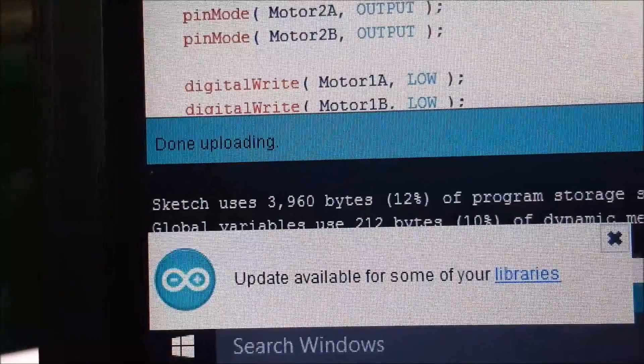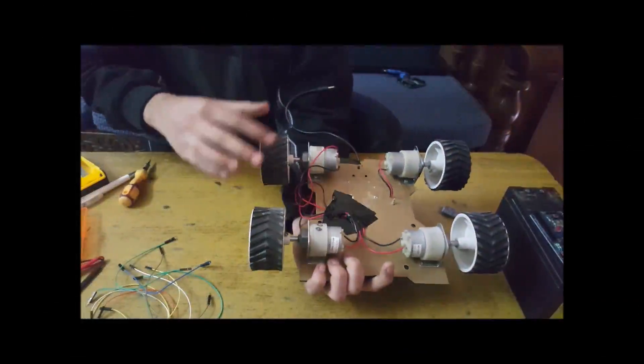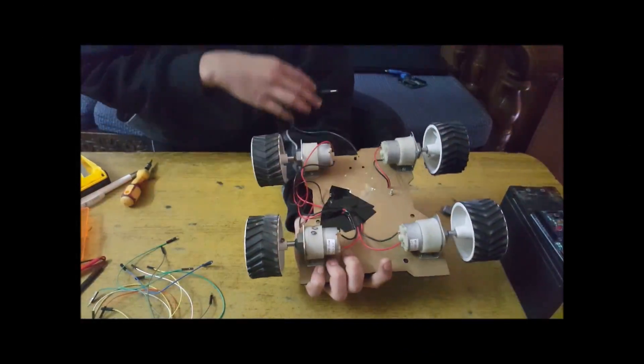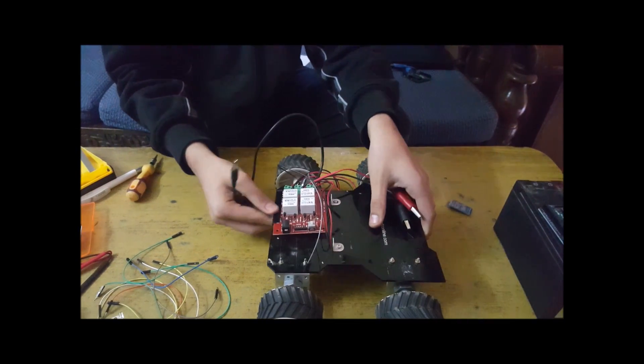Now the program is successfully uploaded to the Arduino. I have connected the 4 motors to the chassis, these are 300 RPM motors and I have connected the wires to the motor drive.